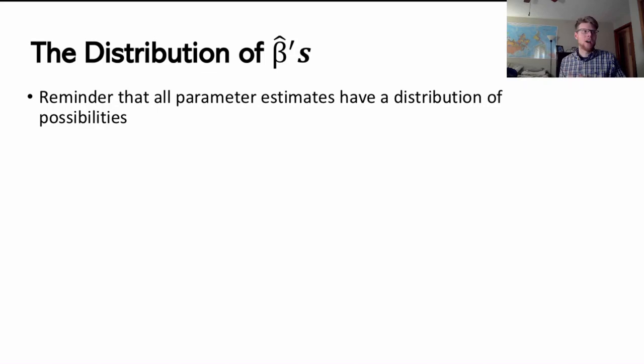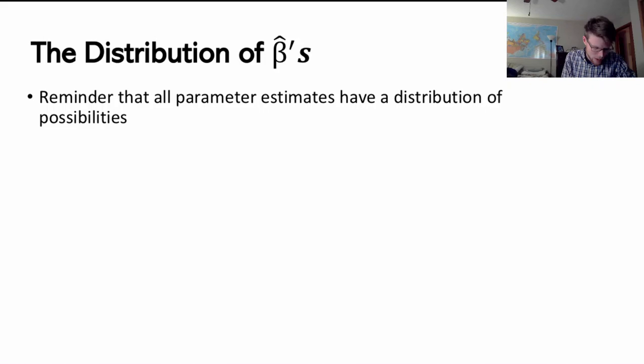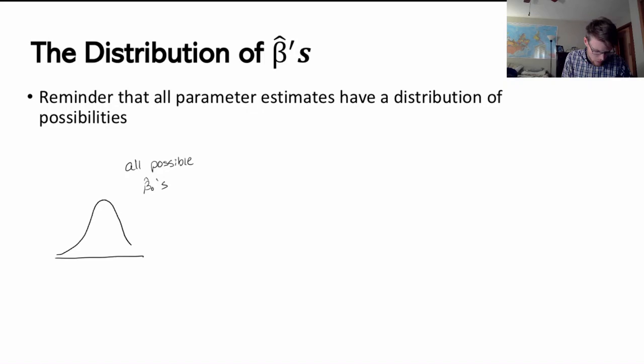So if we think about all the different samples that we could take — I could take a sample of 50, somebody else could take a sample of 50 — we're all going to have slightly different parameter estimates. So we've talked about this before with simple linear regression. If I have a beta hat naught value, all possible beta hat naughts are going to be normally distributed around the true beta naught value.